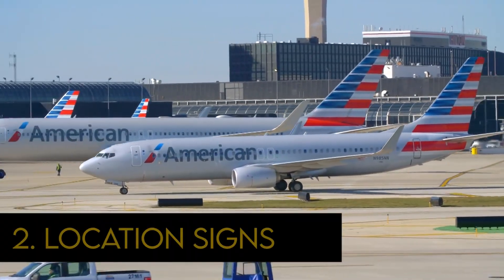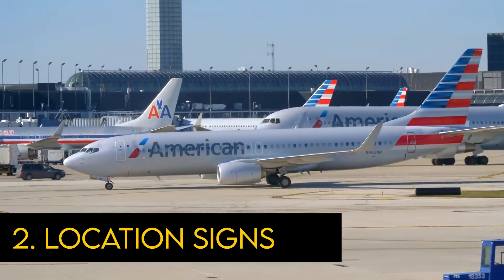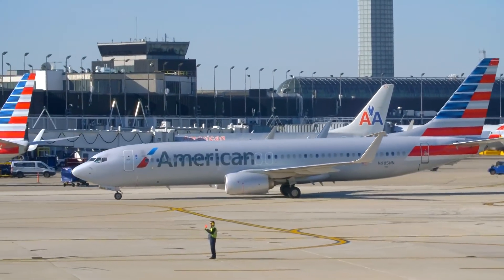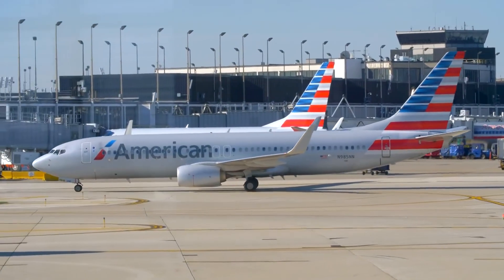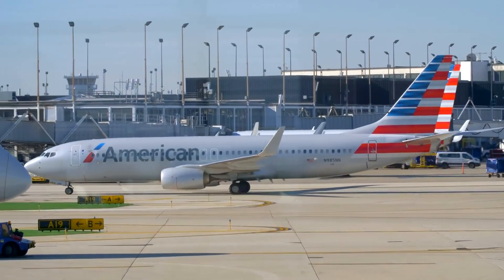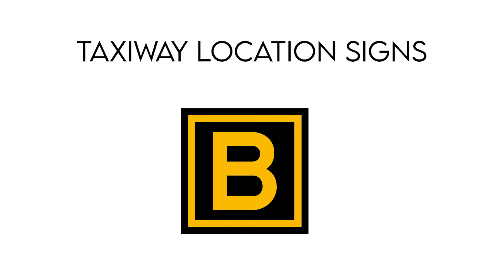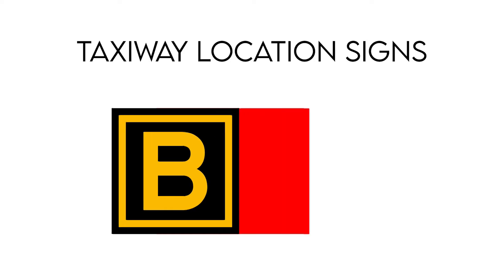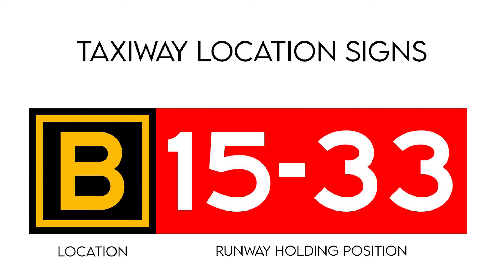The second category of airport signs are location signs, used to identify either a taxiway or a runway on which the aircraft is located. They also provide a visual cue to pilots to assist them in determining whether they have exited an area. Taxiway location signs have a black background with yellow text and a yellow border, showing the designation of the taxiway. These signs are installed along taxiways either by themselves or in conjunction with direction signs or runway holding position signs.